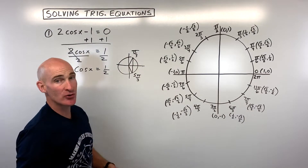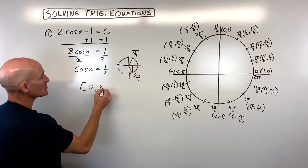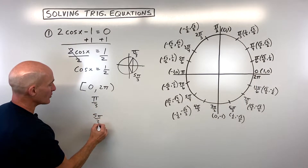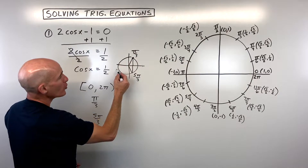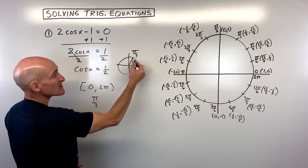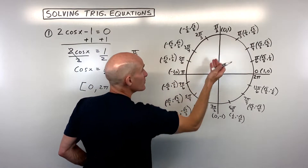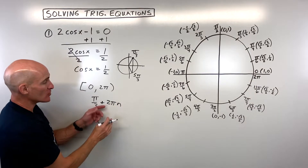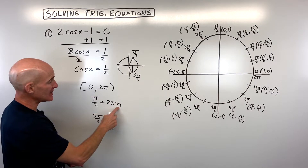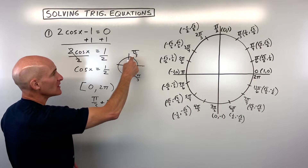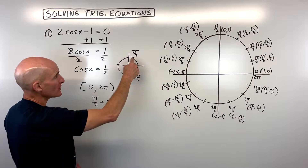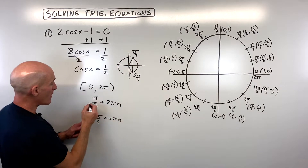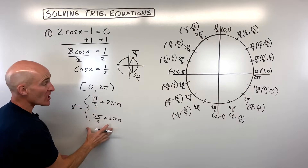If the instruction says solve from zero to two pi, your answers are just pi over three and five pi over three. But if you go all the way around the unit circle again from pi over three, the cosine — that x-coordinate — is still one half. So we can add multiples of two pi. Your teacher might say two pi k or two pi n, where n is an integer. Same thing with five pi over three — add two pi n — and that's your general solution.